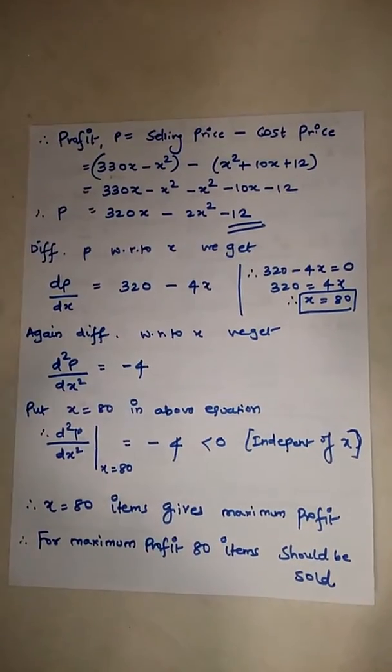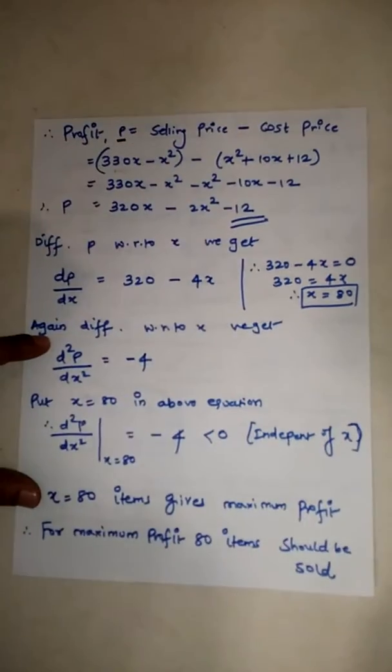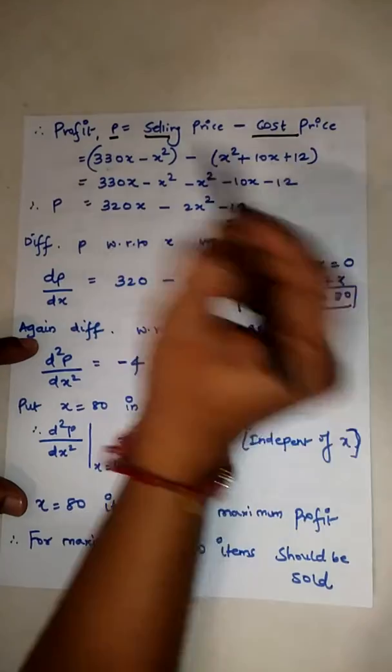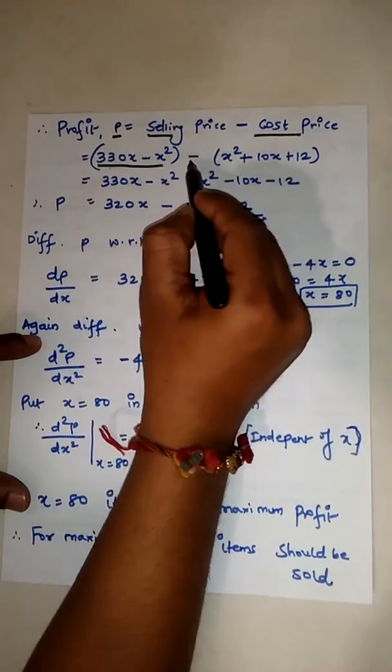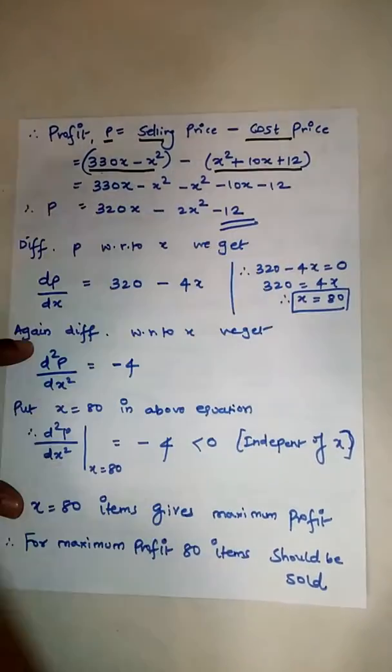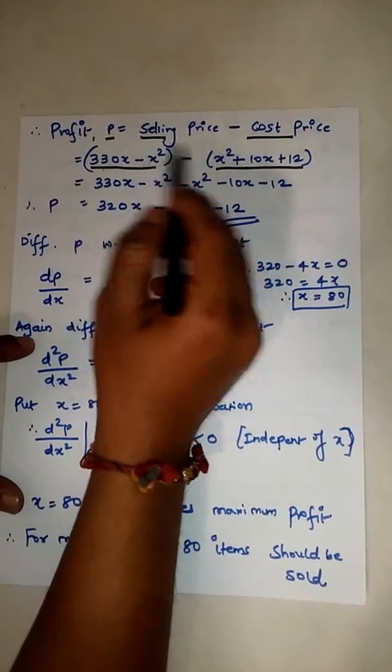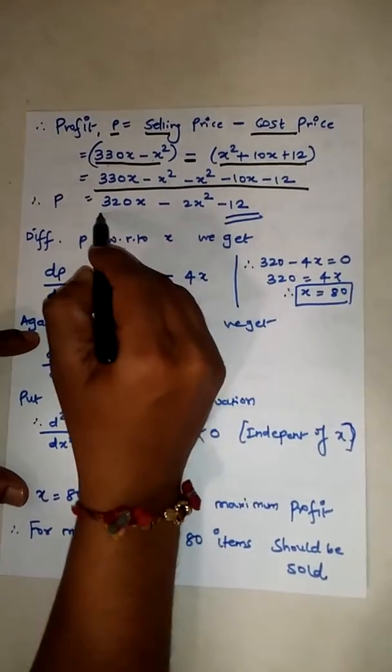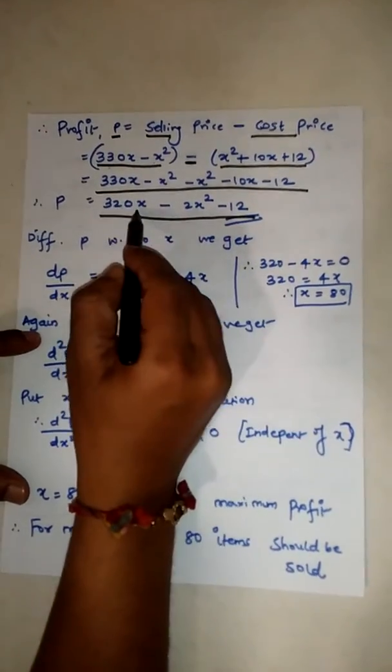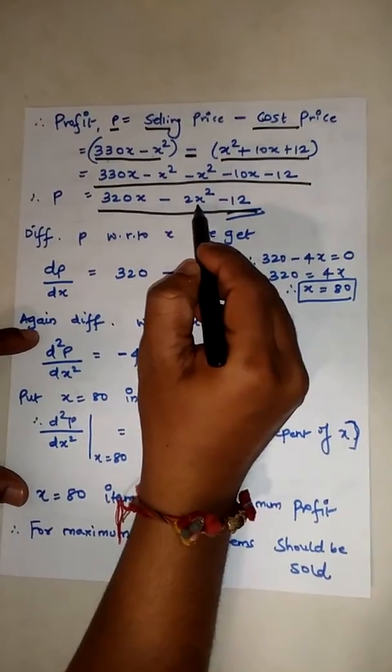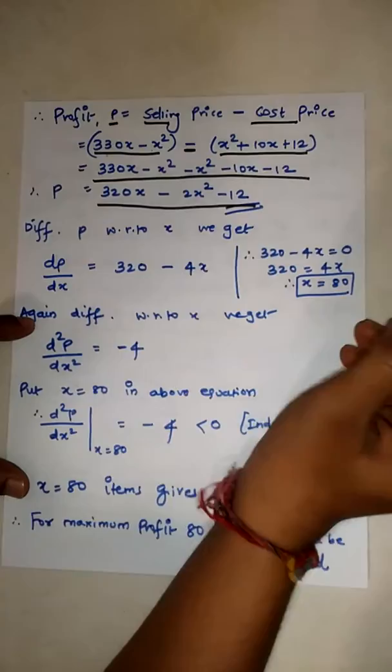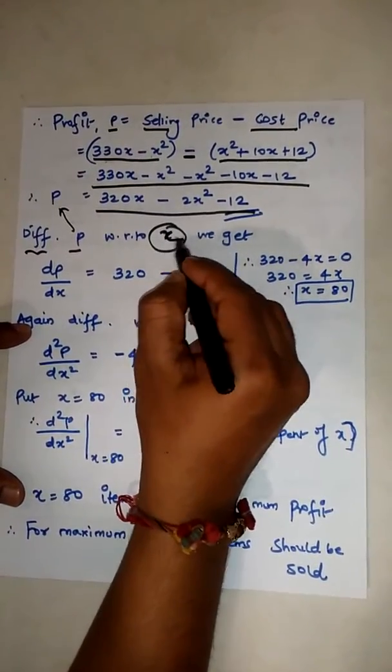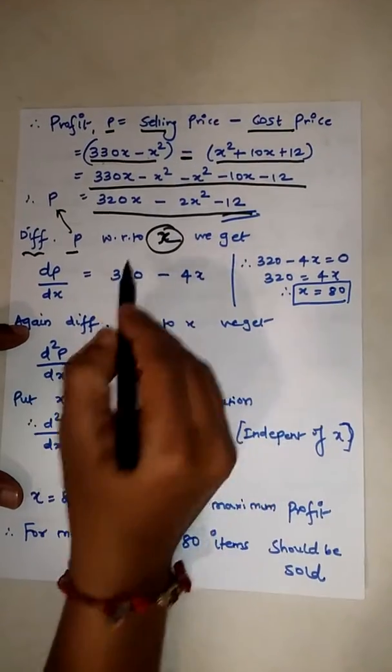Now for profit P, we calculate selling price minus cost price. So 330x minus x squared minus the quantity x squared plus 10x plus 12. When you open this bracket with the negative sign, we get 330x minus x squared minus x squared minus 10x minus 12. This simplifies to 320x minus 2x squared minus 12.